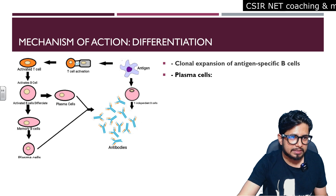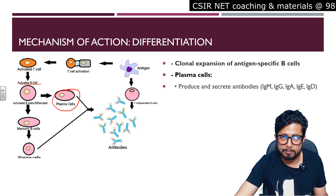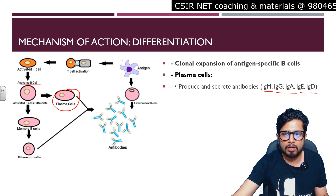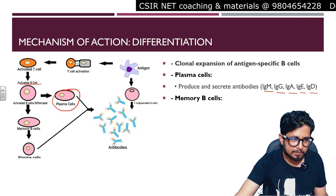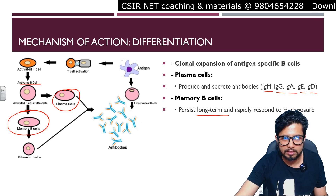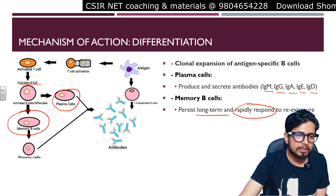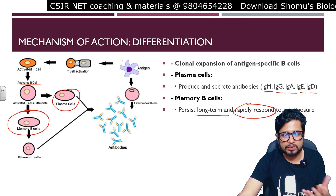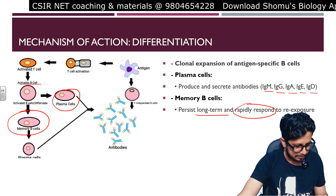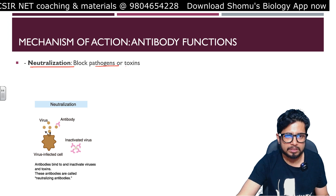In clonal expansion, the activated T cell activates the B cell, which is then converted into plasma cells. These plasma cells produce various kinds of antibodies — immunoglobulins — including IgM, IgG, IgA, IgD, and IgE. They also produce memory B cells, which have a long-term, rapidly responding function upon re-exposure to the same antigen, since they already know the antigen's pattern and properties and can react much more quickly.